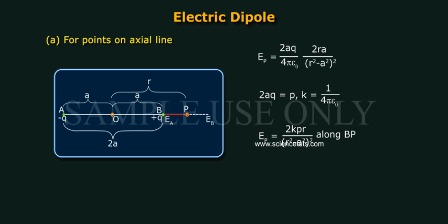Or Ep is equal to 2KPR by (R square minus A square) whole square along BP.